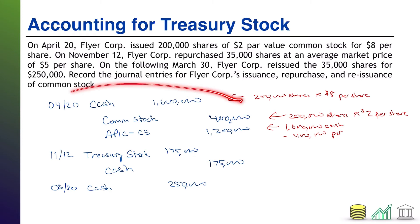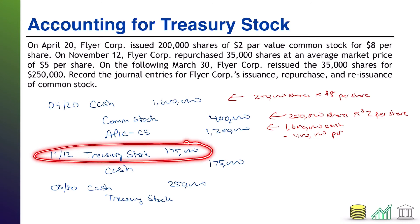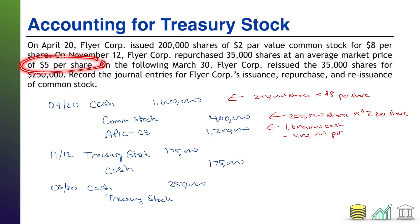Just like in original stock issuance, we have to attribute that cash between par and excess of par. In this case, the par is the par of the treasury stock that we are reselling to the market. And even though that is common stock with a $2 original par value, remember — once you enter into a treasury stock situation, you have reset the par price. So basically the $5 per share that we paid to acquire that stock is its new par value for all intents and purposes.